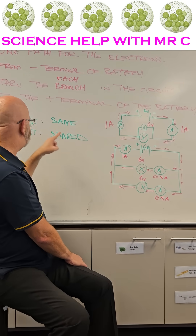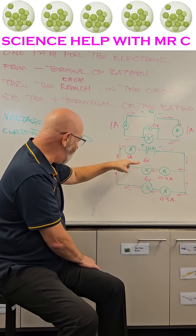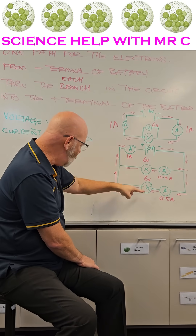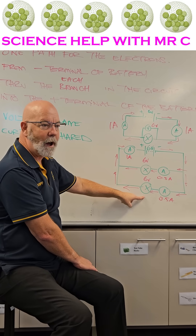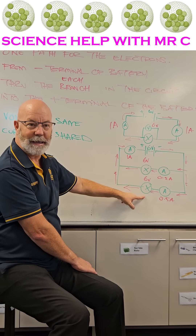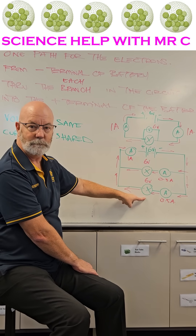For voltage though, it stays the same, so each branch will glow with six volts — which is why a parallel circuit uses up the energy in a battery a lot faster.